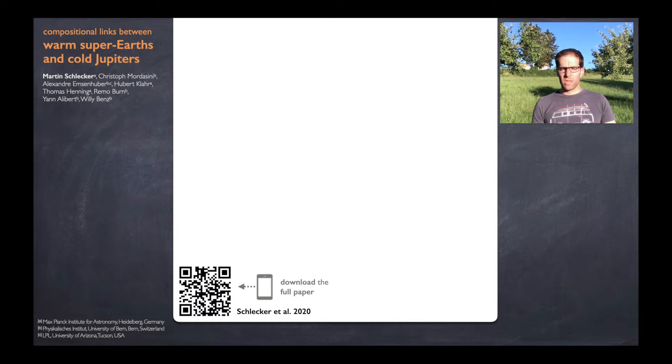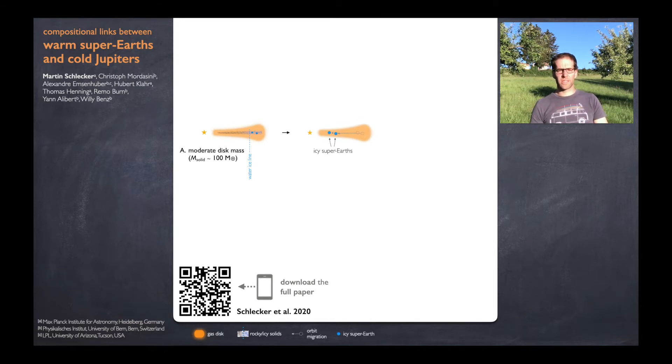In a nutshell, if you have a moderately massive disk, 100 Earth masses or so, we see that primarily icy cores form just beyond the ice line. They migrate to detectable distances and we end up with systems of volatile-rich super-Earths of low bulk density. No giants are formed.